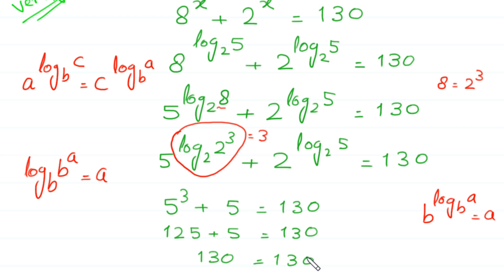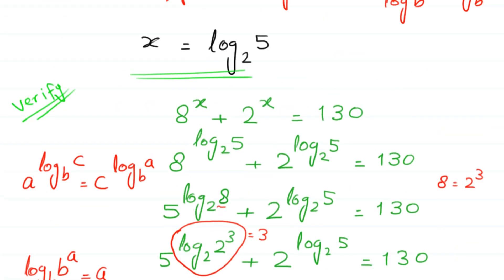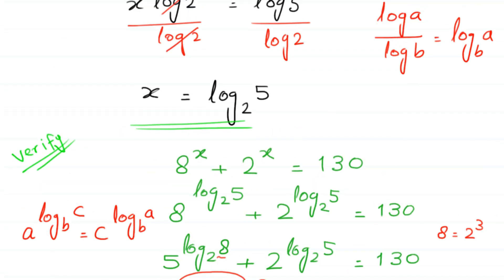You can see that the left hand side is equal to the right hand side. So it is proved that the value of x equals log base 2 of 5 is correct.